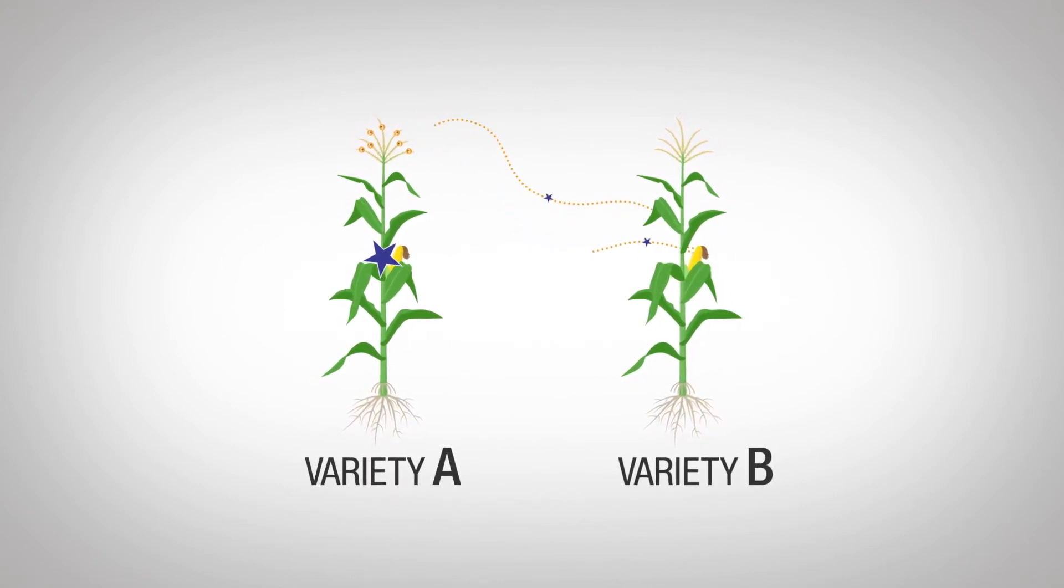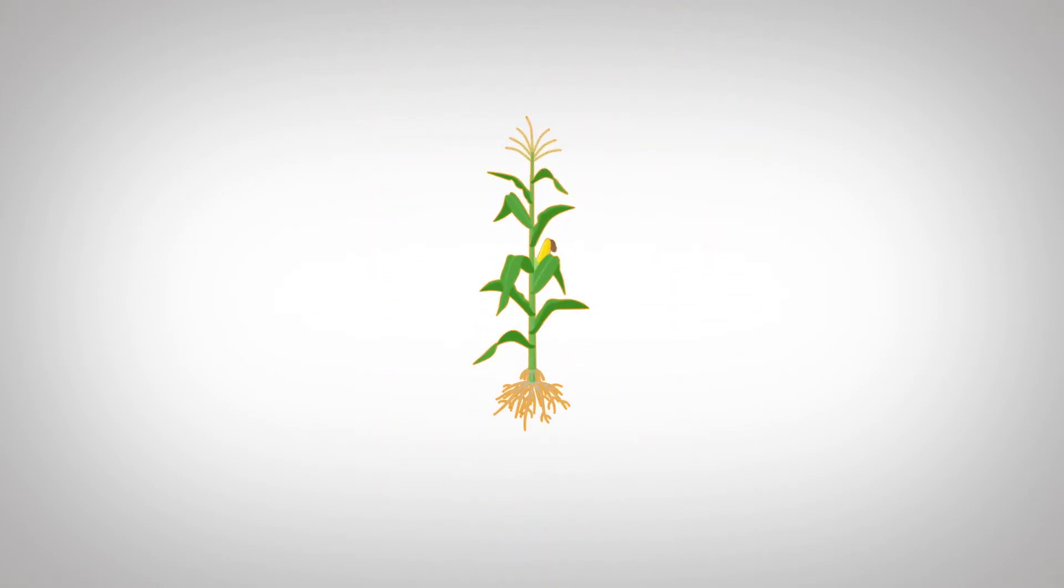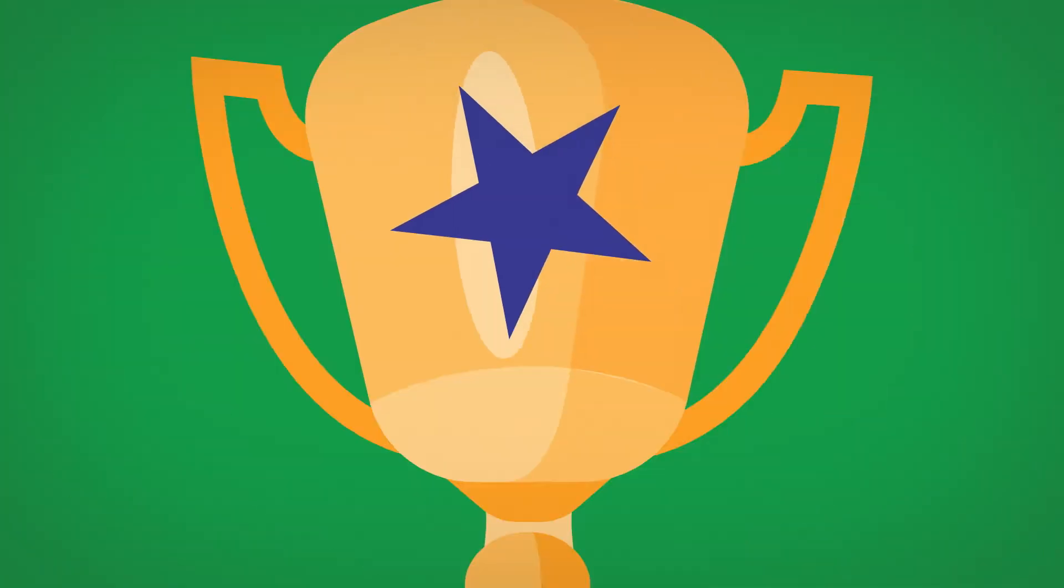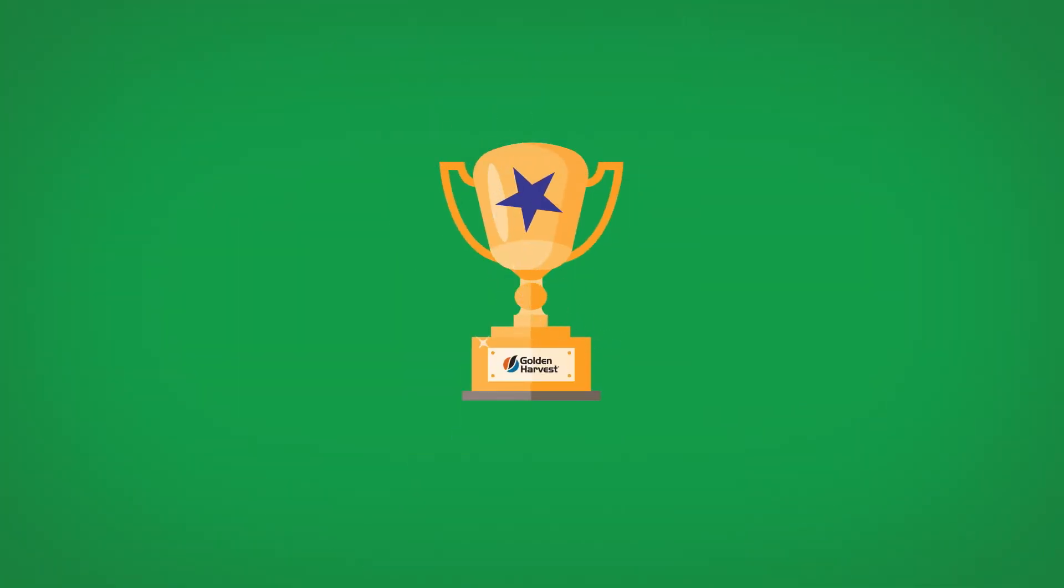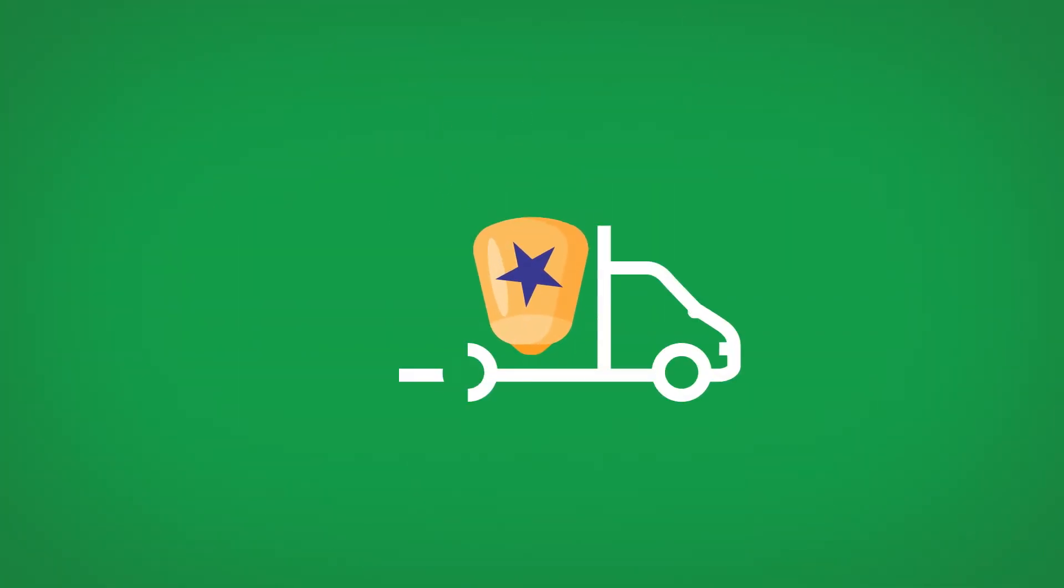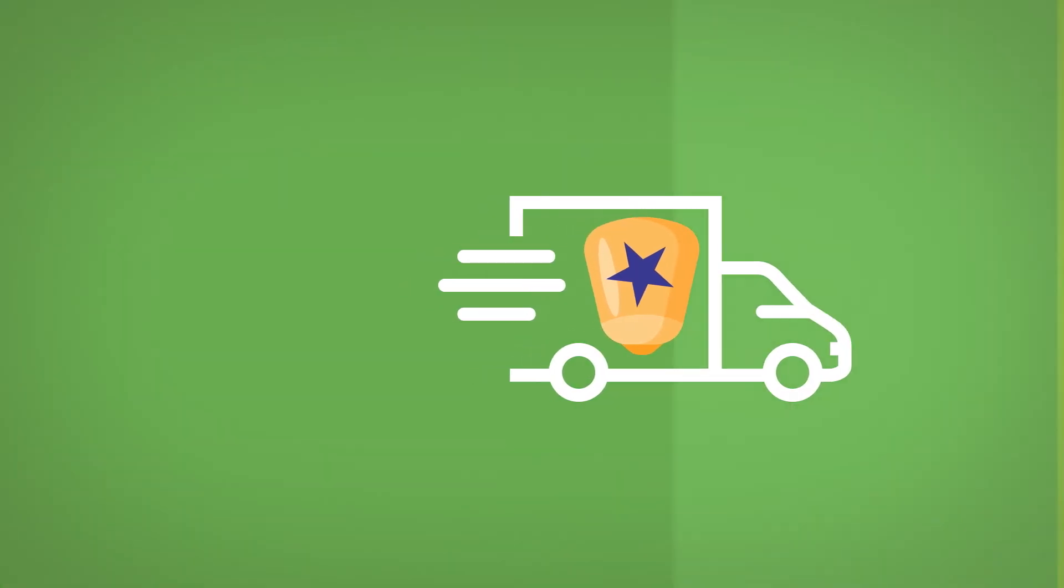After the genome editing occurs, the line that results from this cross will then carry the new trait. What happens next is what makes Hi-Edit technology a landmark achievement in breeding and enables Golden Harvest to create stronger seed solutions faster for farmers.